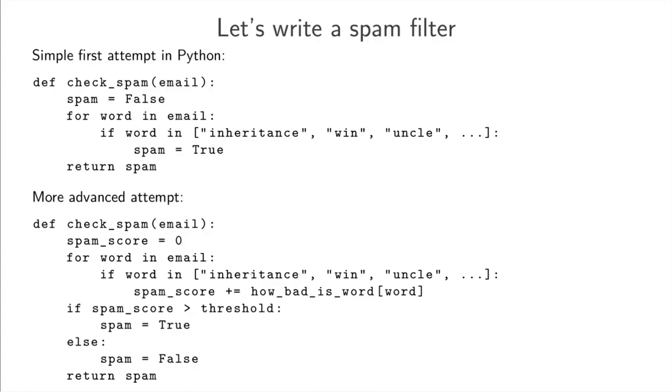So you could in principle have an email containing some of these bad words but if the bad words are just very limited then your score could still be below the threshold and then you would still say that this email is not spam so you could still interact with your uncle.